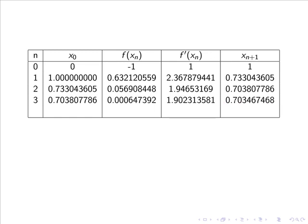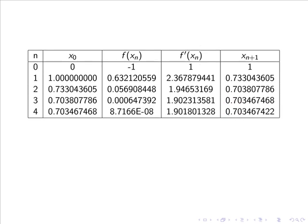And finally if we do one more iteration we get the answer 0.703467422. And now you can see we have the root correct to 7 decimal places. So a root of the equation e to the minus x equals x squared to 7 decimal places is 0.7034674.